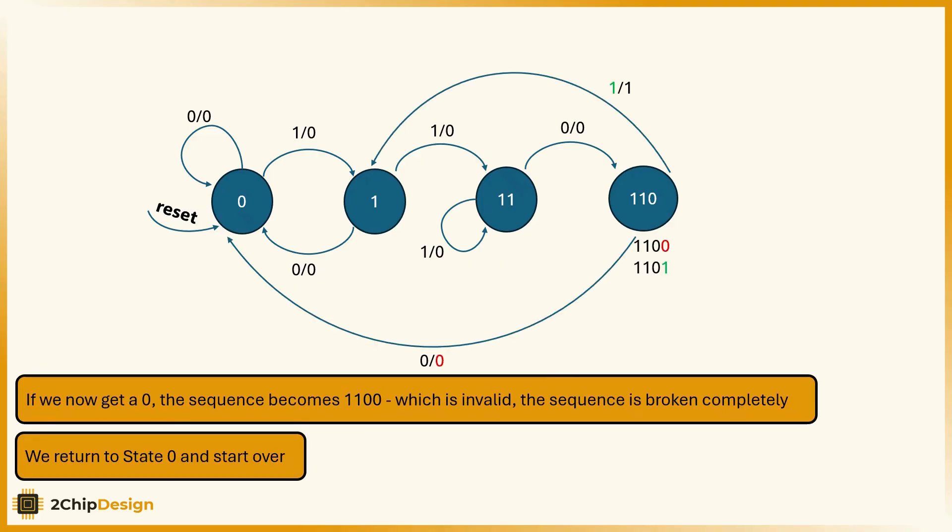If we now get a 0, the sequence becomes 1100, which is invalid. The sequence is broken completely. We return to state 0 and start over.